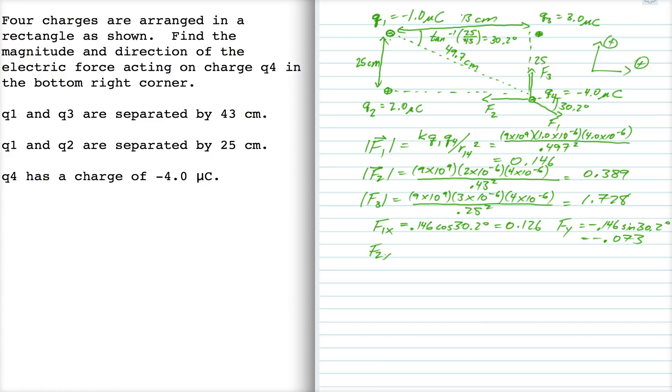As far as the x and y components of F2, F2 points to the left, so the x component is minus 0.389. And the y component is 0. And then for F3, F3 points straight up, so it has no x component. And the y component is 1.728.